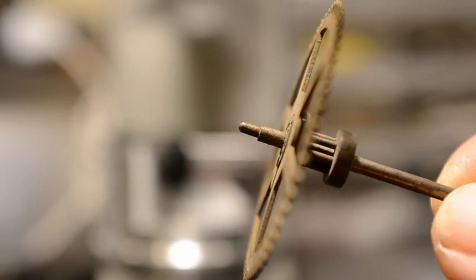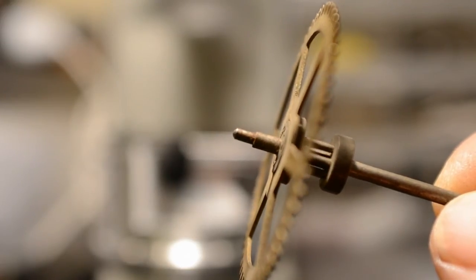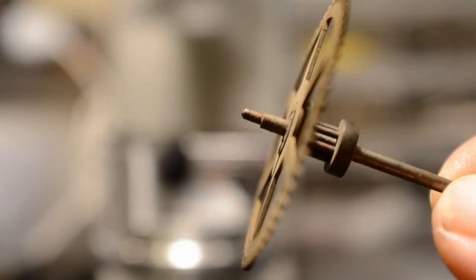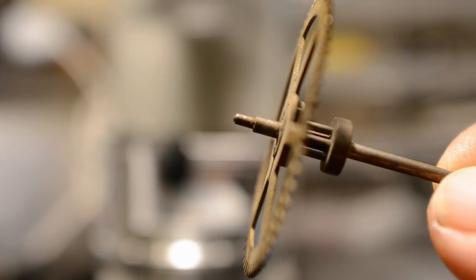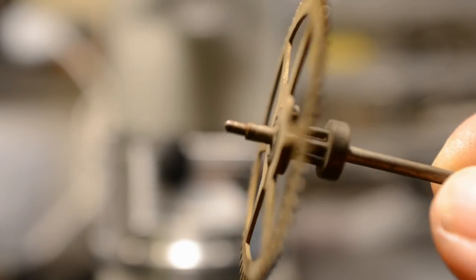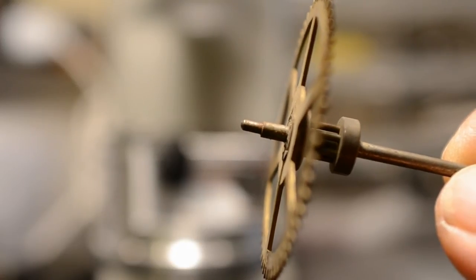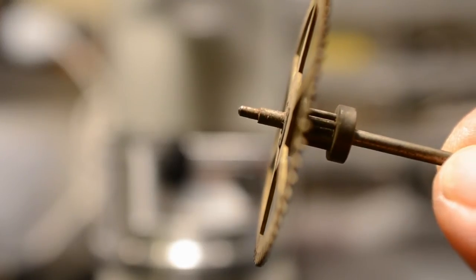In this case we're looking at a pivot and hopefully that's coming through clear. You have marks. It's uneven and it's just not acceptable to be putting this type of pivot back into a clock again.